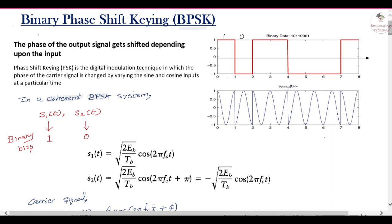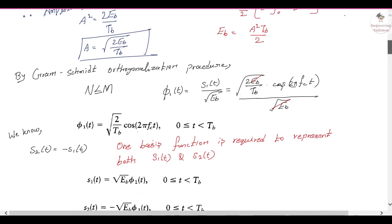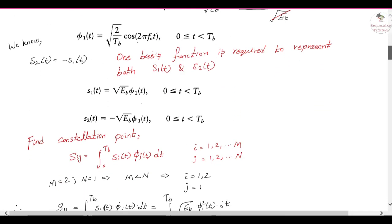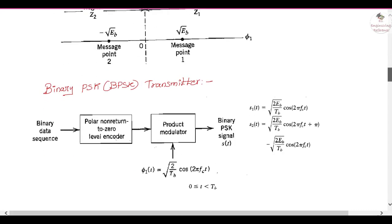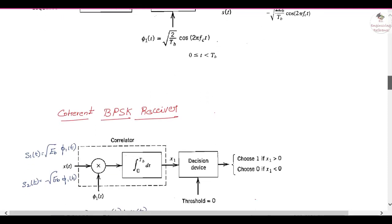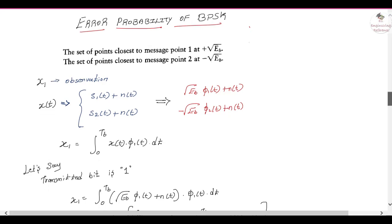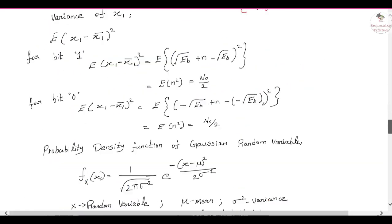In this video we will go through the representation of the BPSK signal, followed by the basis function and how to represent a signal using it, up to the constellation diagram. In the next video we will look at the BPSK transmitter and receiver circuit, then the probability of error that can occur in a BPSK digital modulation system.